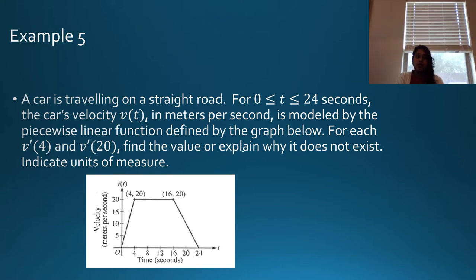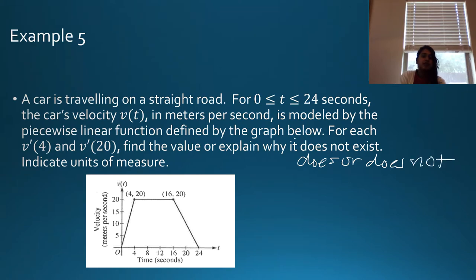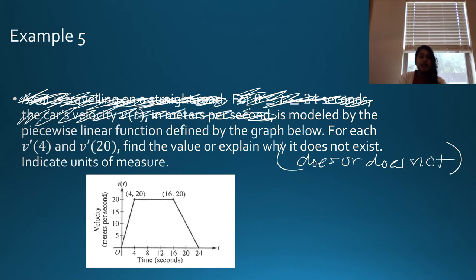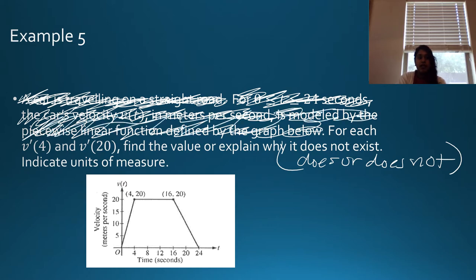Our final question is a visual representation. For each point, find the value and explain whether it does or does not exist. A car is traveling on a straight road for 0 to 24 seconds — that tells me we don't need to account for changes in direction. The car's velocity is in meters per second, and I can see all of this on my graph.